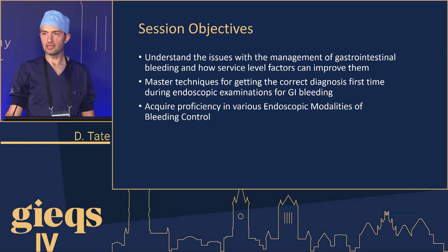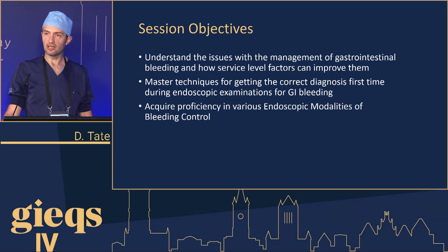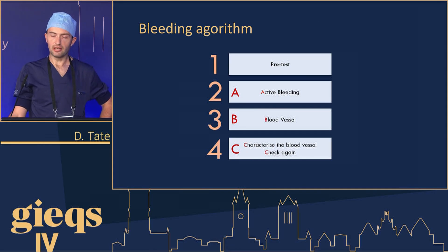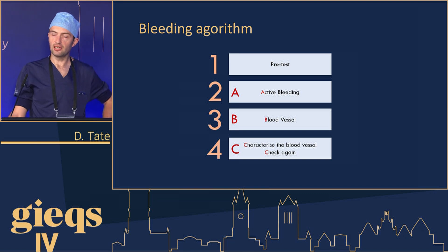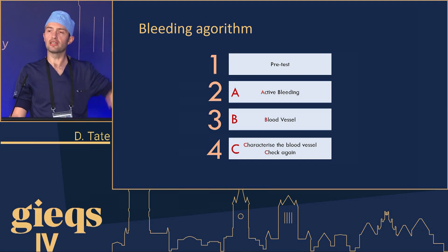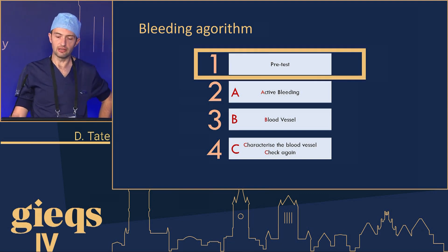We aim to master techniques for getting the correct diagnosis first time during endoscopic examinations for GI bleeding, and to acquire proficiency in various endoscopic modalities of bleeding control. Let's think about an algorithm — here's our algorithm for GI bleeding. As all good algorithms are, it's quite memorable: it starts with pre-test, then it's ABC.